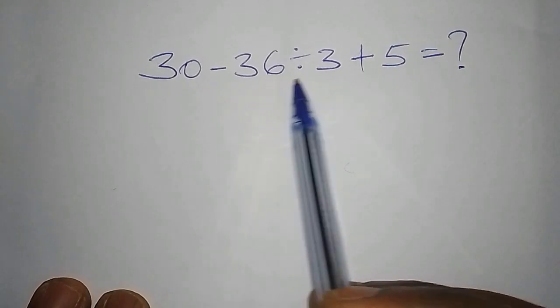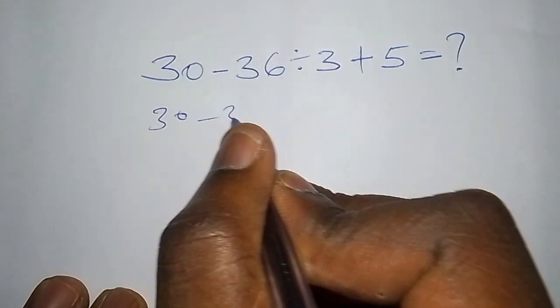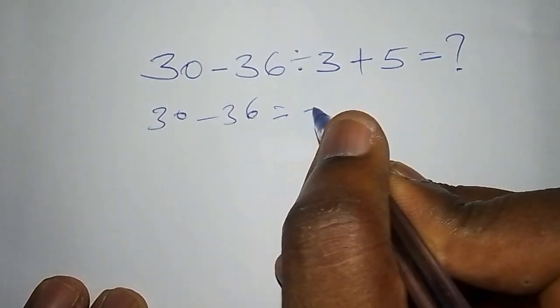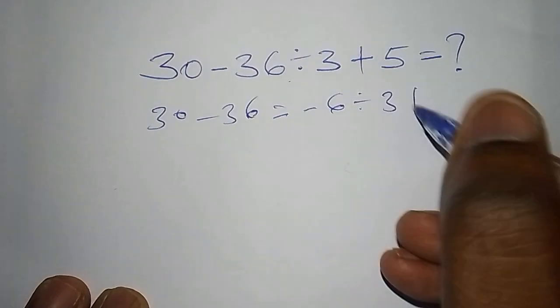We have 30 minus 36 divided by 3 plus 5. Most of us will say, now we have 30, subtract from 36, then they say the answer is minus 6. Then minus 6 divided by 3, add to 5.